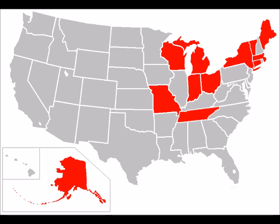Cracks and fissures may also appear as surface areas contract and split apart from the cold. These sometimes superficial to moderate occurrences may range from a few centimeters to several kilometers long, with either singular or multiple linear fracturing and vertical or lateral displacement possible.